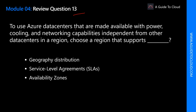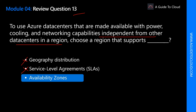To use Azure data centers that are made available with power, cooling, and networking capabilities independent from other data centers in the region, choose a region that supports what? Geographic distribution and Service Level Agreements don't relate to this. The correct answer is Availability Zones. Availability Zones are data centers set up as isolation boundaries from others in the region, with their own power, cooling, and networking. If one zone goes down, the others in the region continue to work.